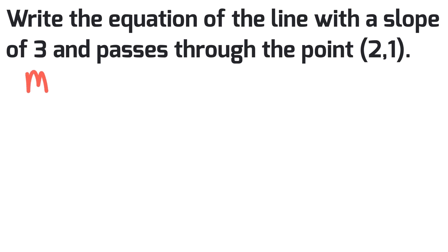So I know that my slope is 3, so I'll show that here: m equals 3. That's the first thing I'm going to do. I'm going to substitute that into my equation of a straight line, y equals mx plus b, and I can substitute that y equals 3x plus b.